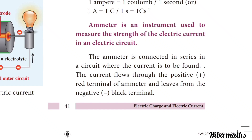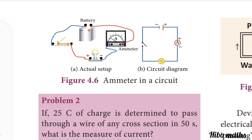The current flows through the positive red terminal of the ammeter and leaves from the negative black terminal. The actual setup includes a bulb, a switch, a battery, and an ammeter. In the circuit diagram there is a switch, battery, ammeter, and bulb. When you turn on the switch, the circuit is complete and the bulb glows. The bulb and ammeter are connected in series.